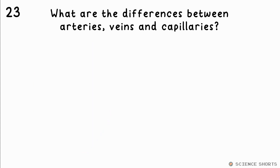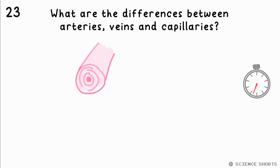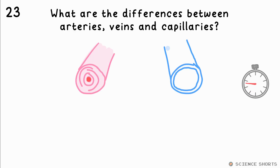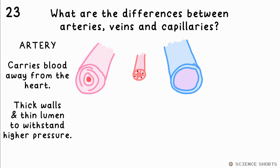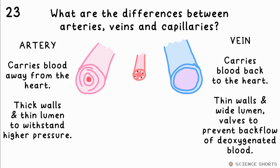Question 23. What are the differences between arteries, veins and capillaries? Arteries carry blood away from the heart — they carry oxygenated blood, apart from the pulmonary artery. They have thick walls and a small lumen to deal with the higher pressure. Veins carry blood towards the heart, and so they carry deoxygenated blood, apart from the pulmonary vein.